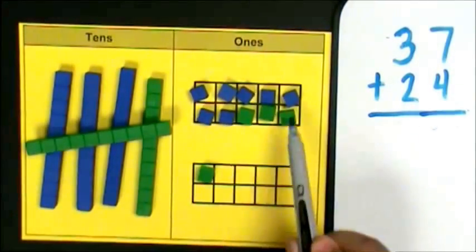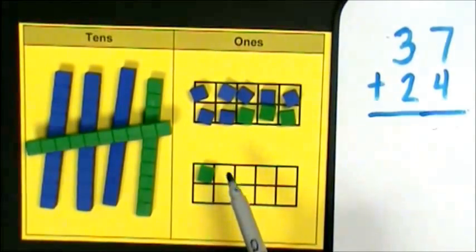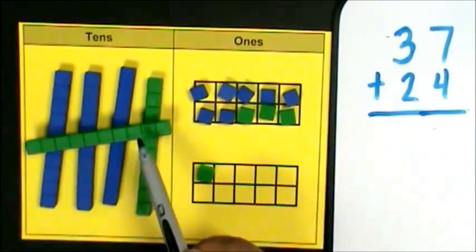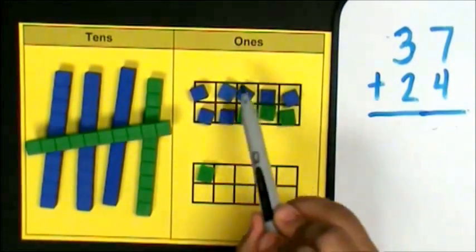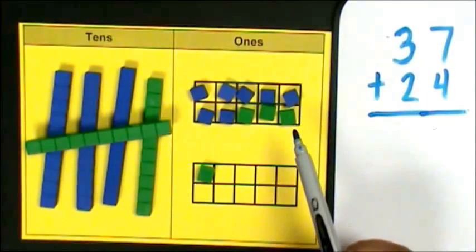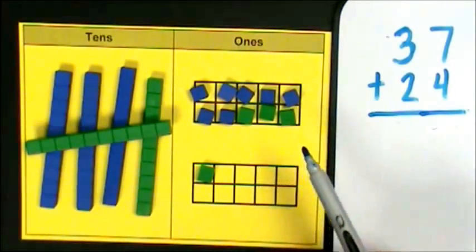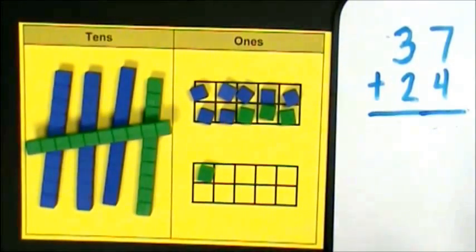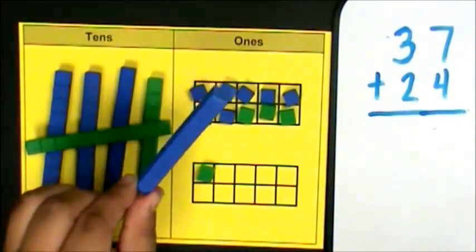I have 11 ones and 5 tens. My 10 frame is complete. That means I will regroup and exchange my 10 ones for 1 ten.